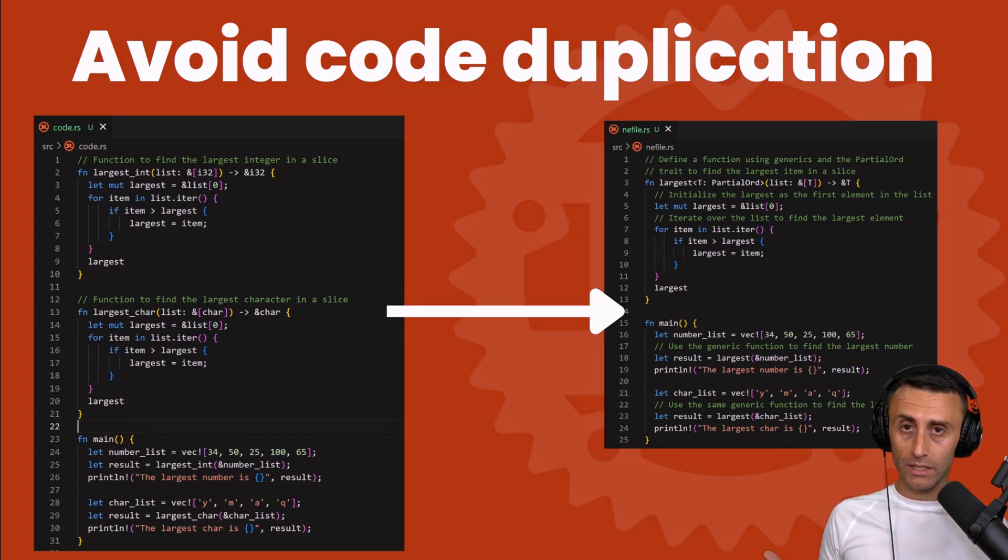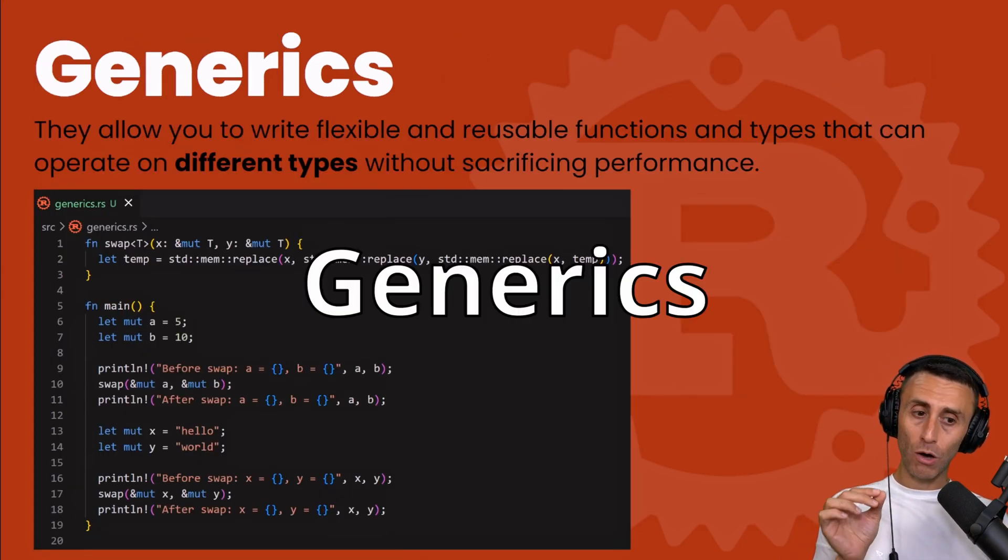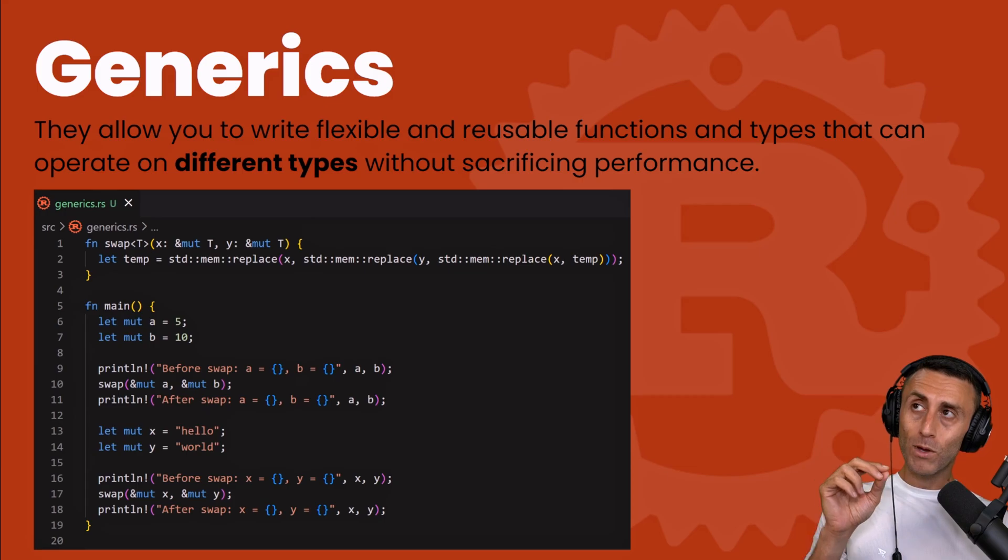So we can implement a way to have a single function that takes a generic type. Maybe generics are not that easy to understand at the beginning, but of course they are very powerful. Generics allow us to write flexible and reusable functions and types using different types without sacrificing the performance of our code.